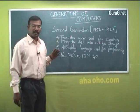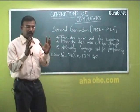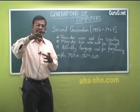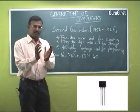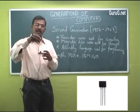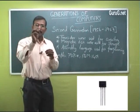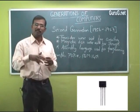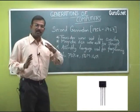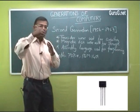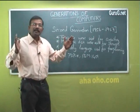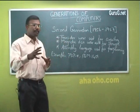In the second generation, instead of vacuum tubes, transistors were used. Transistors are semiconductor devices generally manufactured using germanium or silicon. The size of the earlier transistors was around a radius of 3 cm, while later transistors were around 3 mm. Compared to first generation computers, second generation computers were relatively smaller in size.